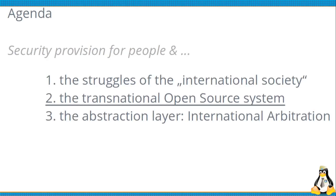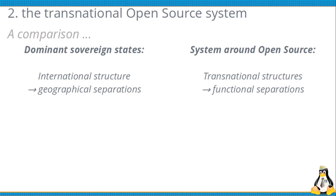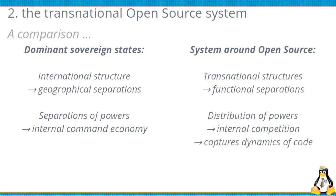This leads us to the open source system. In comparison: we have geographical separations in dominant sovereign states, and we have functional separations in open source. Geography is really a secondary thing — it's more about: are you a kernel developer, a tester of a distribution, or one of the management people? It's a functional thing, and everything else is secondary. And instead of the separation of powers, which is a type of command economy in itself, we have a distribution of powers, which is competition — and it captures the static dynamics of code within this distribution of power.